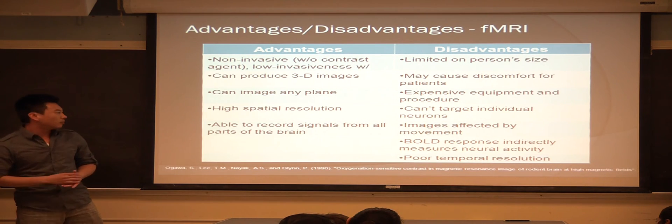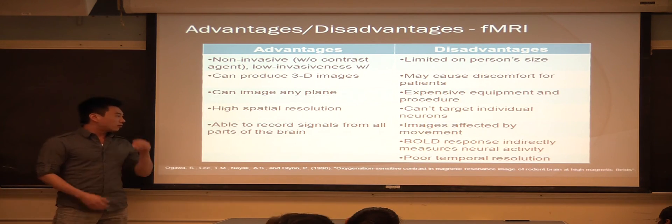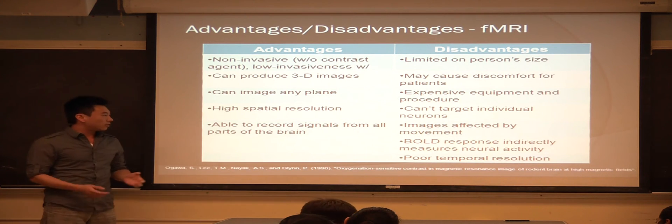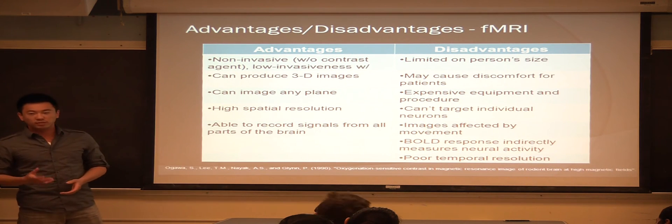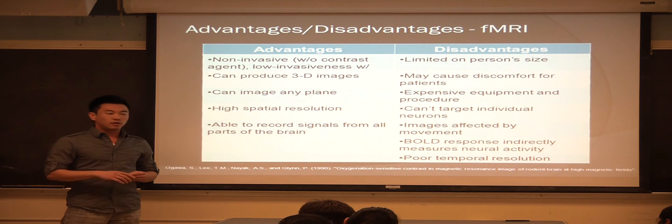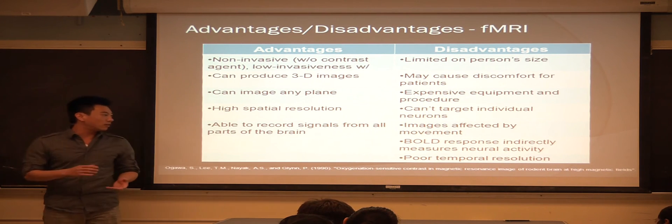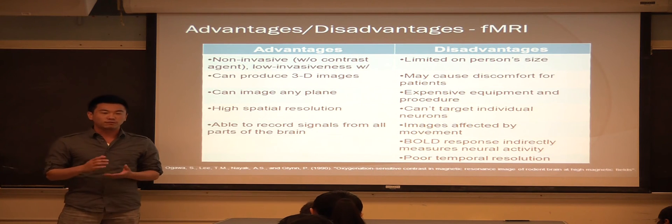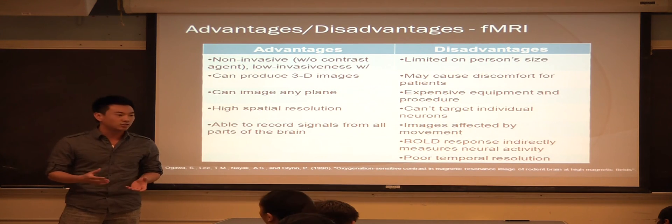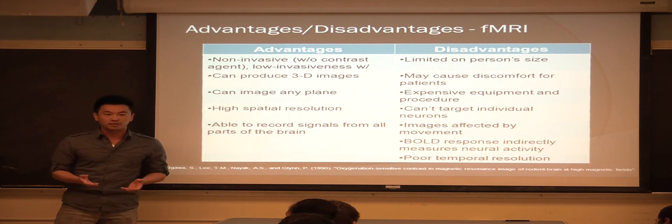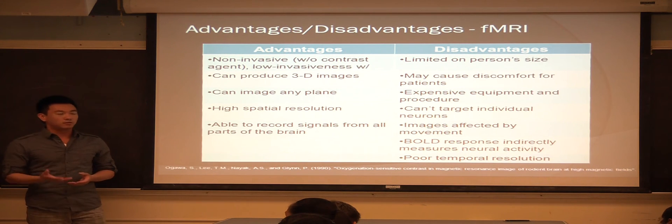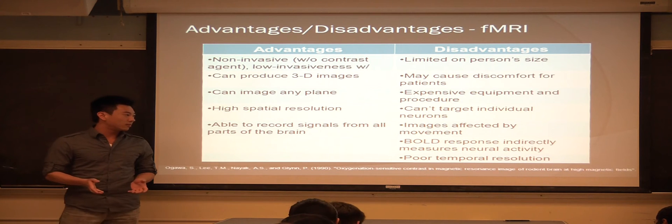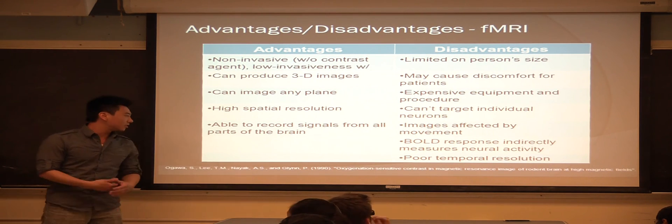And another problem with the fMRI, with this method, is that the BOLD response is an indirect method of determining neuroactivity. It measures blood flow, and blood flow can be influenced by other factors of the body, not just neuroactivity. So this may cause one to mislead the analysis of the image.